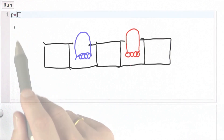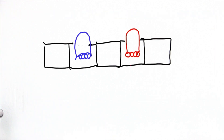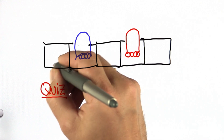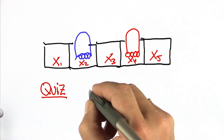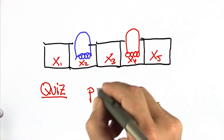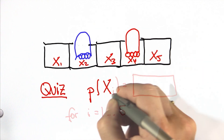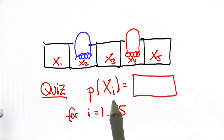What I'd like you to program is a world with five different cells or places where each cell has the same probability that the robot might be in that cell, so probabilities add up to 1. Here's a simple quiz: for cells x1 all the way to x5, what is the probability of any of those cells? Index i goes from 1 to 5.